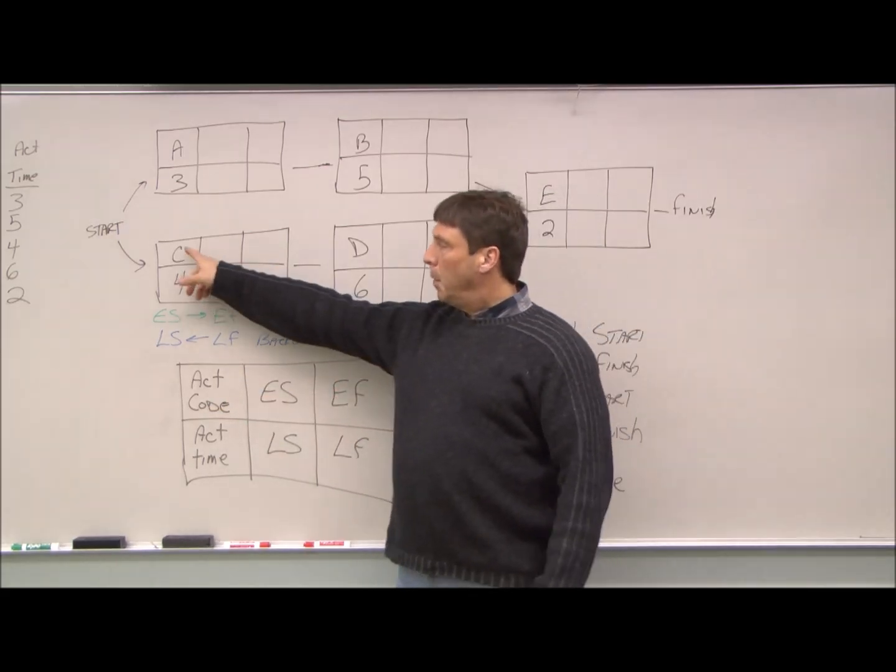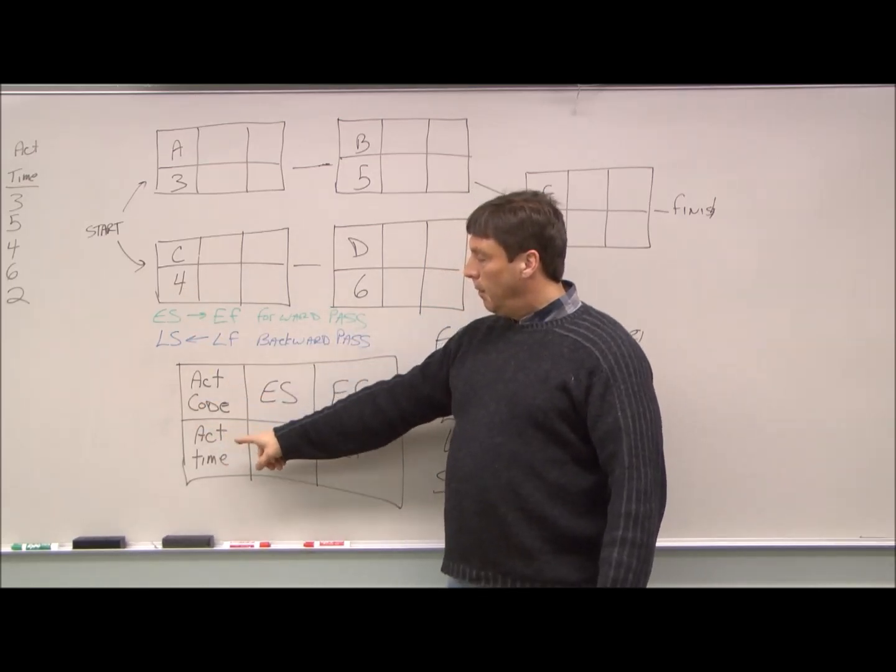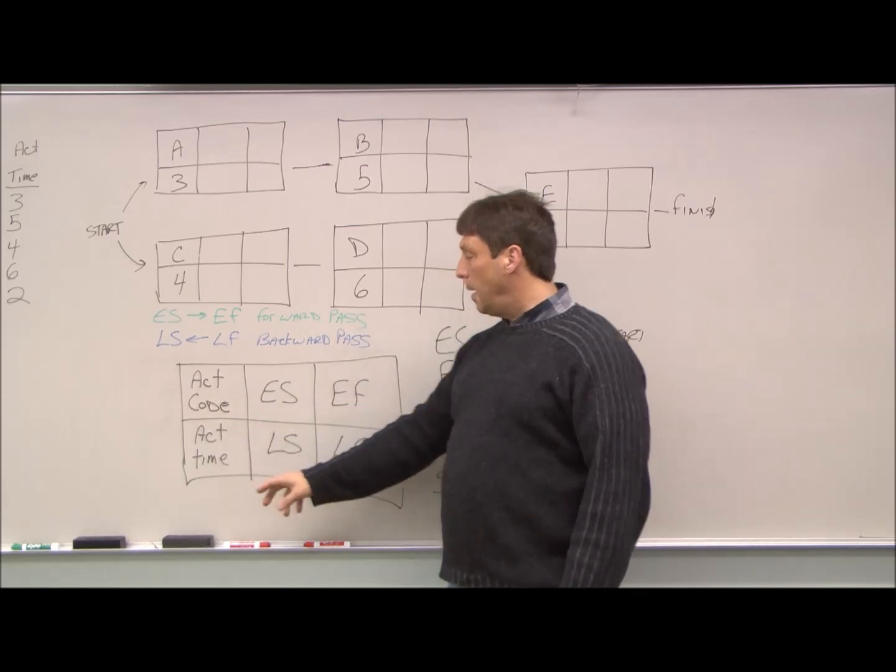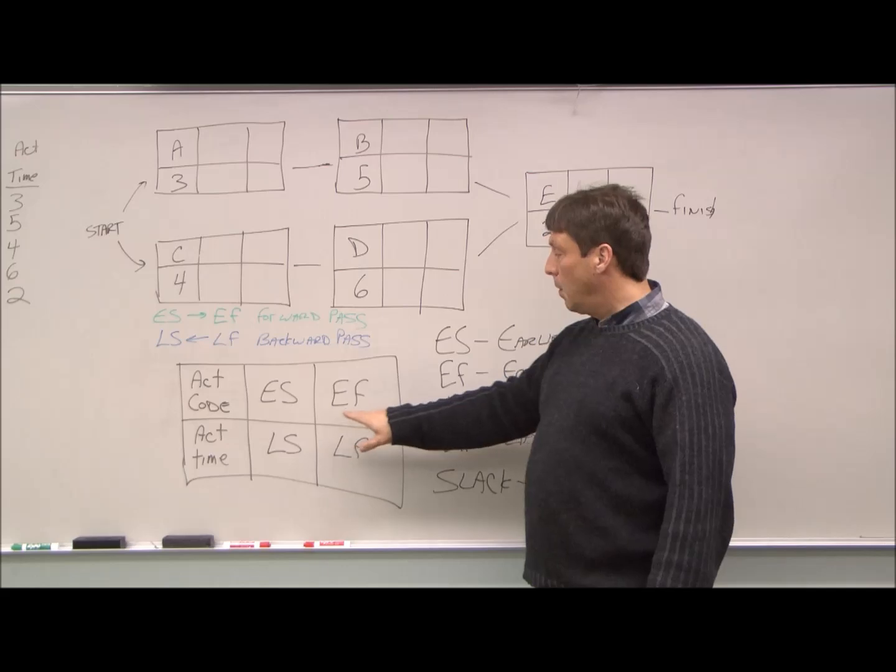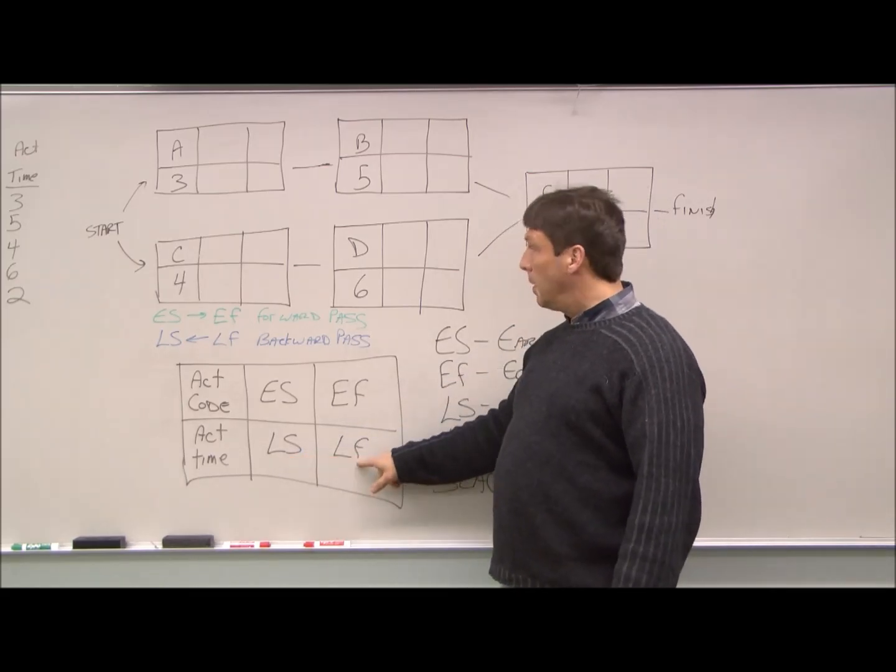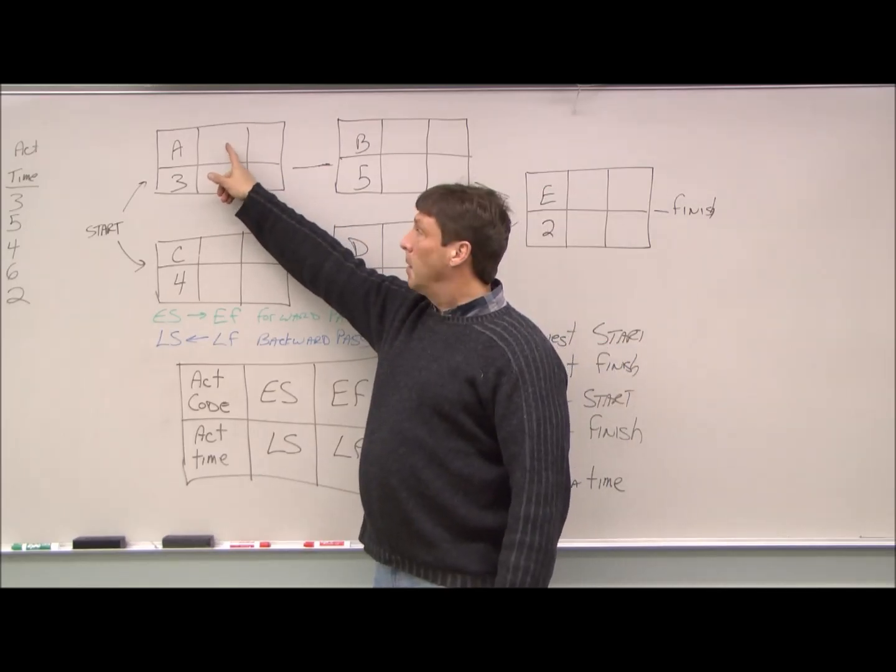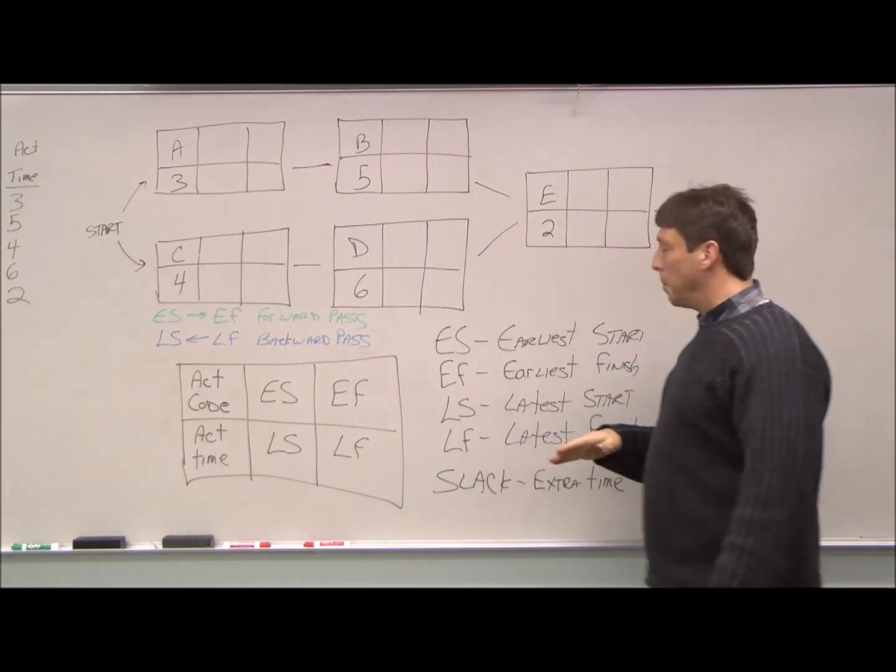You notice before we were just working with the activity code and the activity time. So the activity code and the activity time, they go on the blocks on the left. The top row here is our earliest start or earliest finish. The bottom row is our latest start, latest finish. So we have to come up with the earliest start and latest start and finish for each one of our blocks.